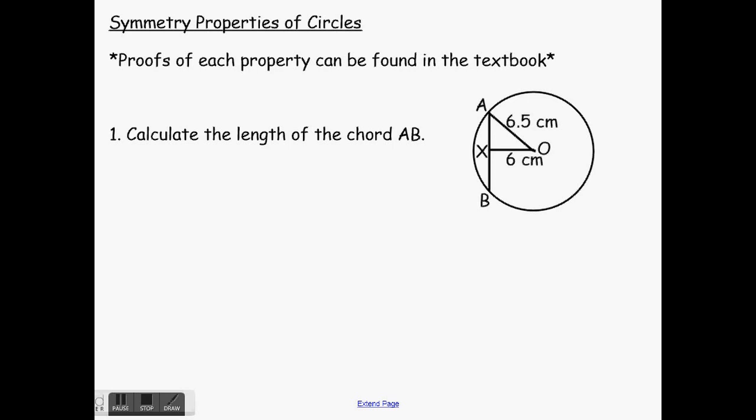Our first example: we want to calculate the length of chord AB. Here's our circle. I have chord AB and I need to find the length of that. I know the radius of my circle is 6.5 centimeters, and I know from the center to X is 6 centimeters. Right here is a right angle, because this here would be the perpendicular bisector of this chord. The first property says the perpendicular bisector goes through the center, so that line bisects the chord AB. Any ideas on what I might use to solve for my length here? Pythagorean theorem — exactly.